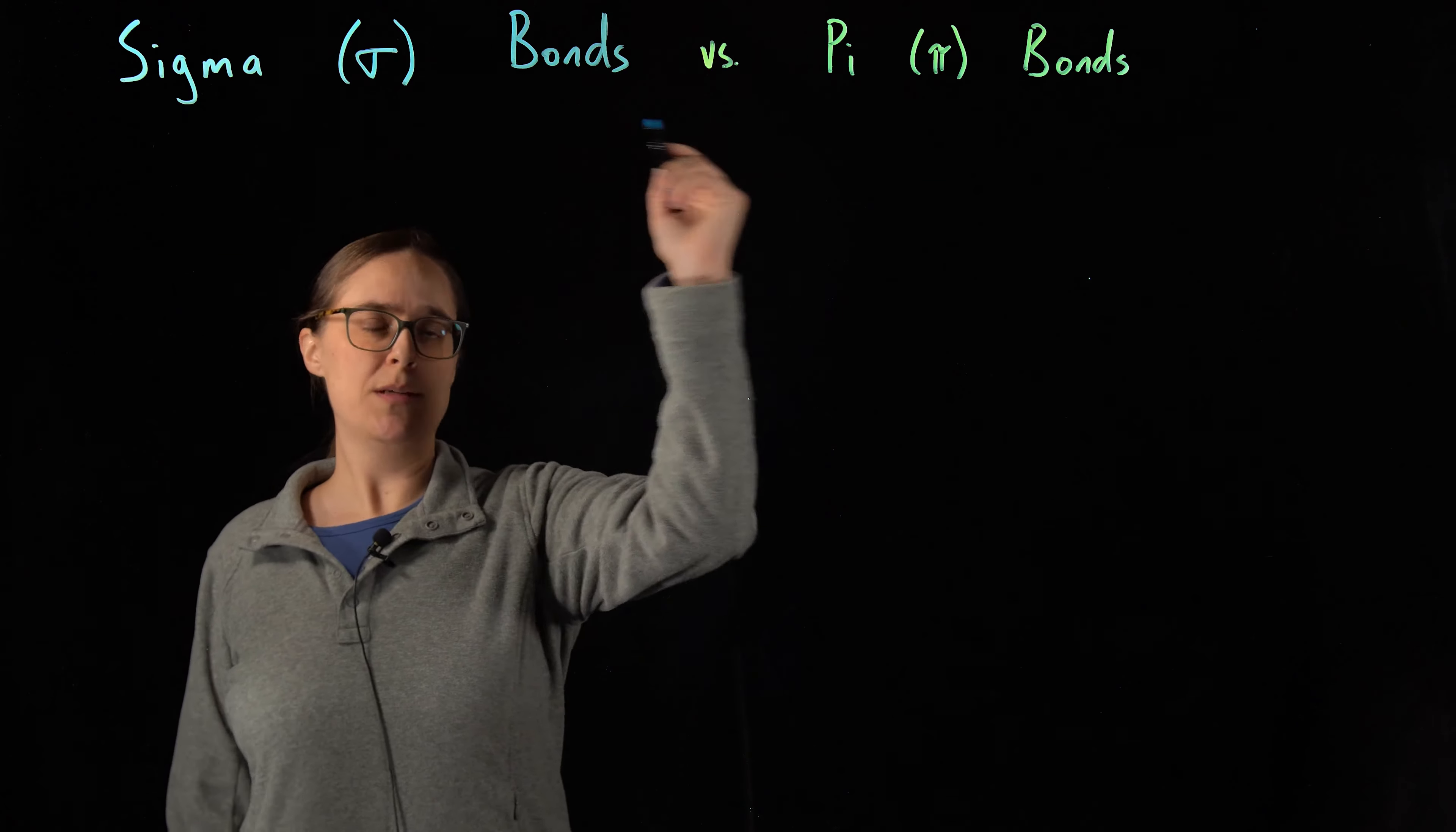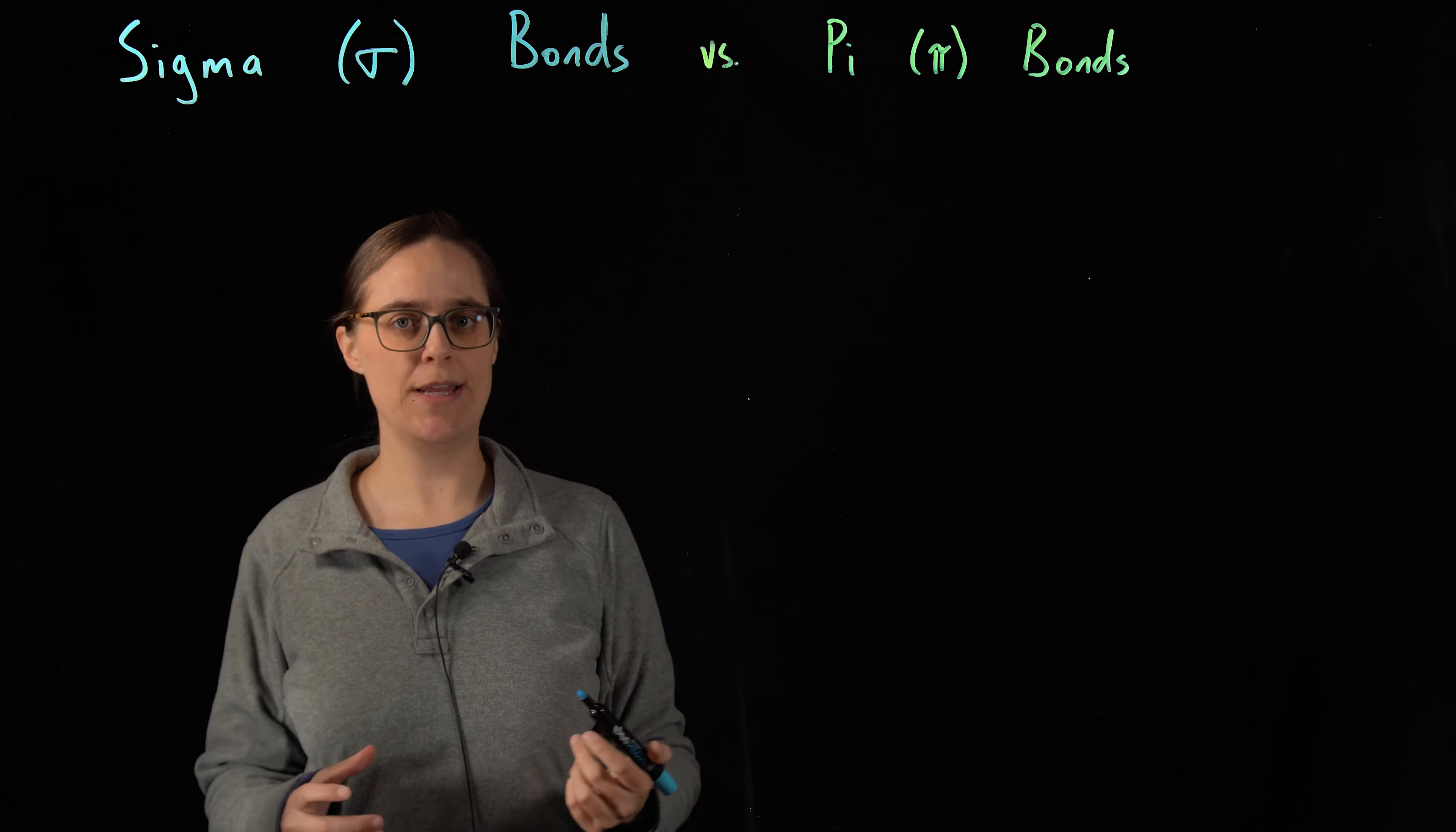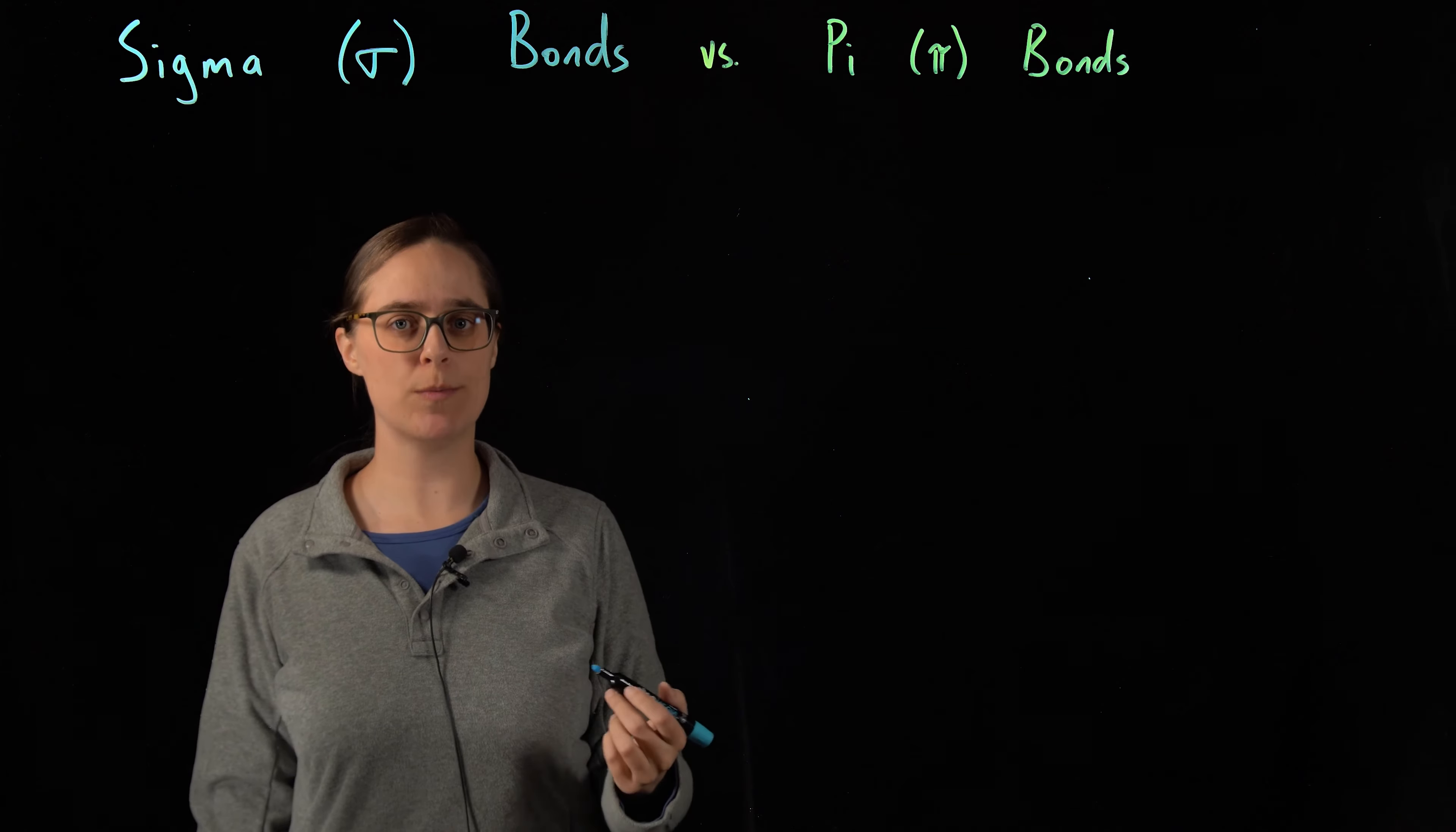I want you to understand the difference between sigma bonds and pi bonds. Electrons orbit the outermost part of atoms, and each electron has its own region of space or territory where it's most likely to be found. These territories are called orbitals.